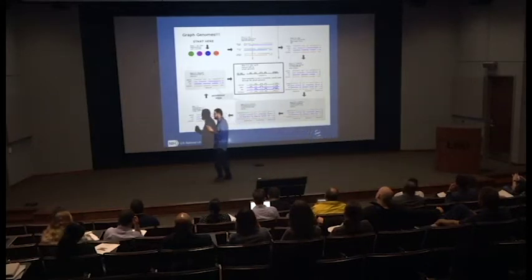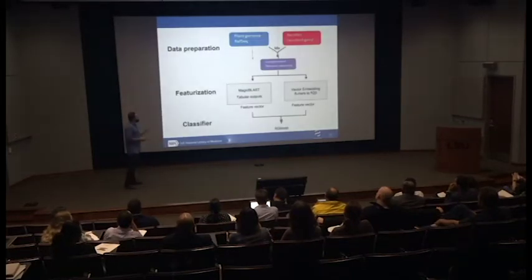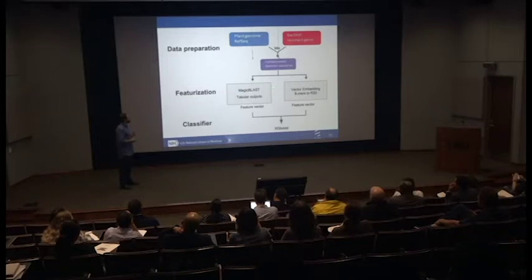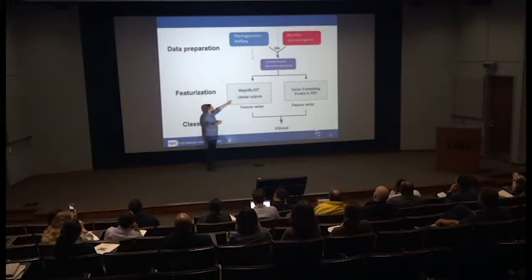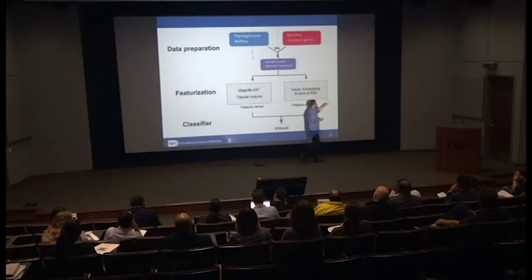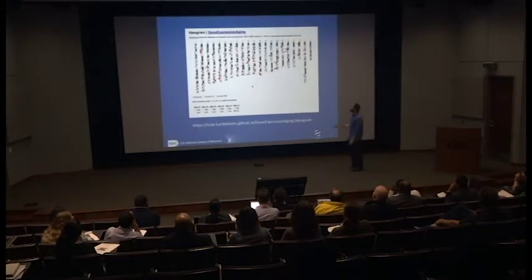Now everybody wants to do machine learning. We're using machine learning to look at contamination in plant sequences. If you know the contaminant, MAGIC BLAST works quite well. If you don't know the contaminant, we make 8-mer vectors, reduce to 20 dimensions, and use XGBoost. For known contaminants we get about 91% sensitivity, and for unknowns also about 91% sensitivity.